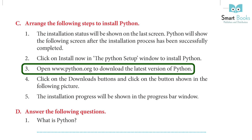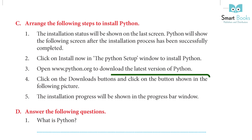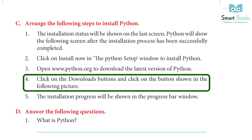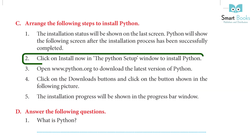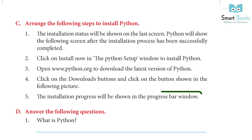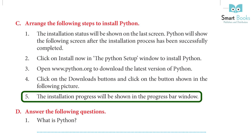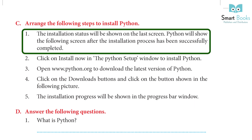Arrange the following steps to install Python: 1. Open www.python.org to download the latest version of Python. 2. Click on the Download button. 3. Click on Install Now in the Python Setup window to install Python. 4. The installation progress will be shown in the progress bar window. 5. The installation status will be shown on the last screen. Python will show the following screen after the installation process has been successfully completed.